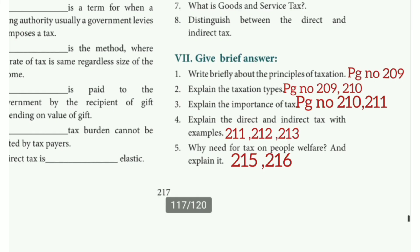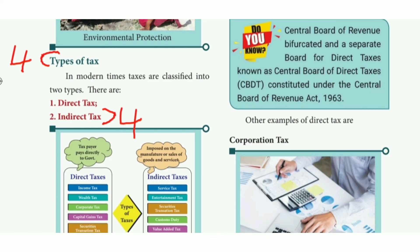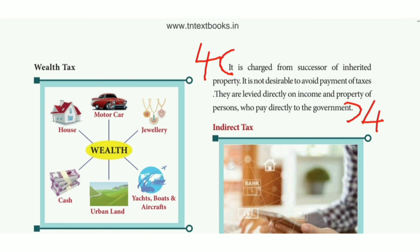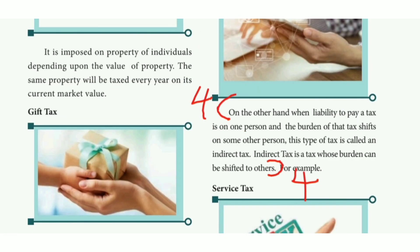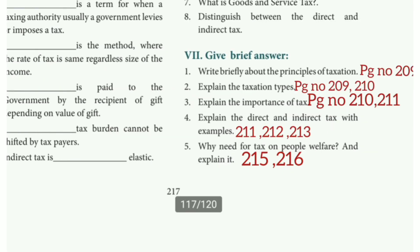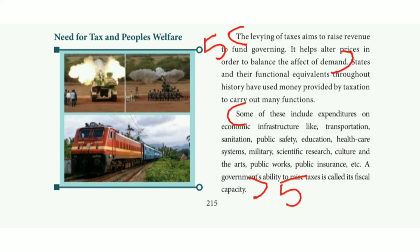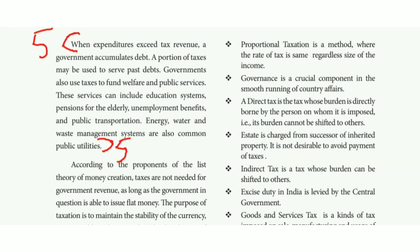Fourth question: explain direct and indirect tax with examples. Refer to page number 211 — two types of tax. Direct tax: heading, four lines on the back of the heading. Then indirect tax: in the back of the picture there is a paragraph with five lines. Last question: why is there a need for tax and people's welfare? Explain. Refer to page numbers 215 and 216 — two paragraphs: first paragraph three lines, last paragraph six lines, then next page starting paragraph of about nine lines, fill out two lines.